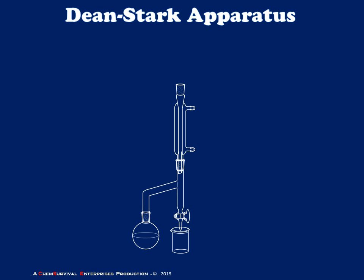Shown here is one of the simplest Dean-Stark apparatus you can build, designed to isolate an organic of lower density from water. The apparatus consists of a boiling flask attached to an inclined sidearm, which is then plumbed to a reflux condenser. Below the condenser is a region called the trap, which typically has a stopcock at the bottom so that the flow can be directed into a beaker or other suitable collecting flask.